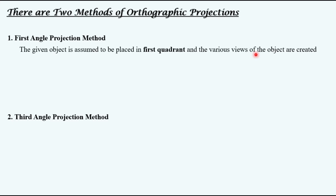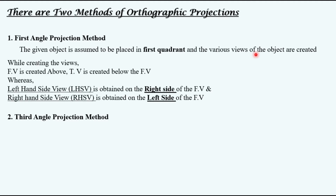According to the first method, the given object is assumed to be placed in the first quadrant and the various views of the object are created. While creating the views using the first angle projection method, the front view is created above, the top view is created below the front view, whereas the left-hand side view is obtained on the right side of the front view and the right-hand side view is obtained on the left side of the front view.